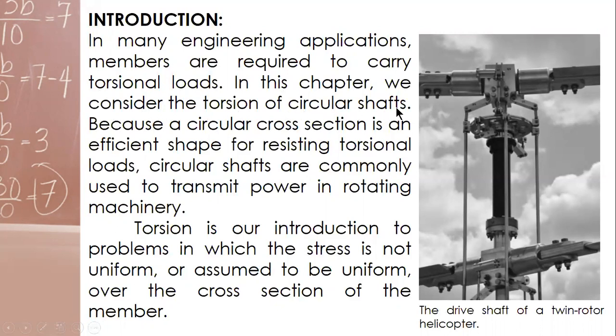The easiest one to analyze is circular shafts in torsion. Because the circular cross-section is an efficient shape for resisting torsional loads, circular shafts are commonly used to transmit power in rotating machinery.